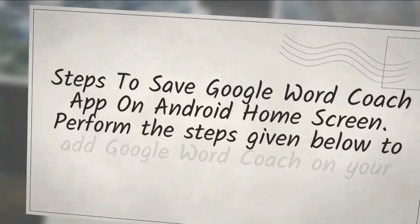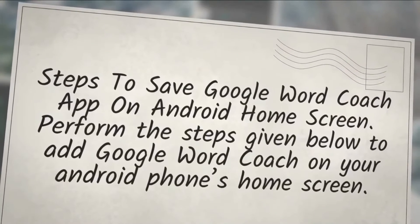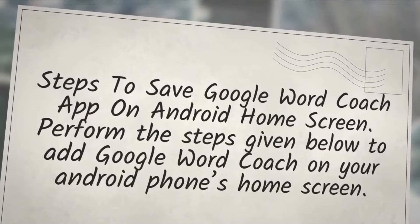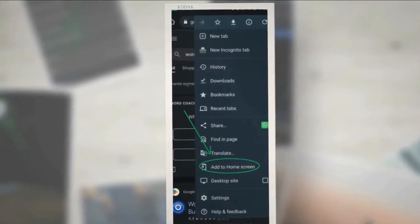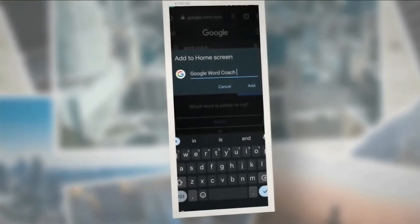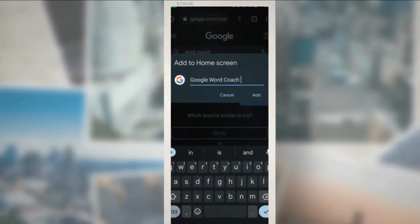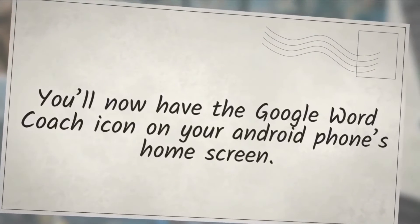Steps to save Google Word Coach app on Android home screen. Perform the steps given below to add Google Word Coach on your Android phone's home screen. 1. Click on the three-dot Chrome options and click on add to home screen. 2. Rename the icon to Google Word Coach and click on add. You'll now have the Google Word Coach icon on your Android phone's home screen.